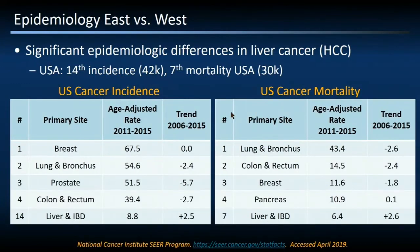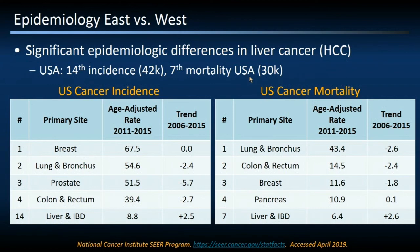When you juxtapose that with the United States perspective, you see some really discrepant numbers. In the US, HCC comes in as 14th in terms of overall new cancer diagnoses and seventh in terms of cancer mortality. The US accounts for about 5% of the overall incidence of HCC and about 3.5% of cancer deaths worldwide. Those numbers are shockingly different on the US stage versus the world stage.